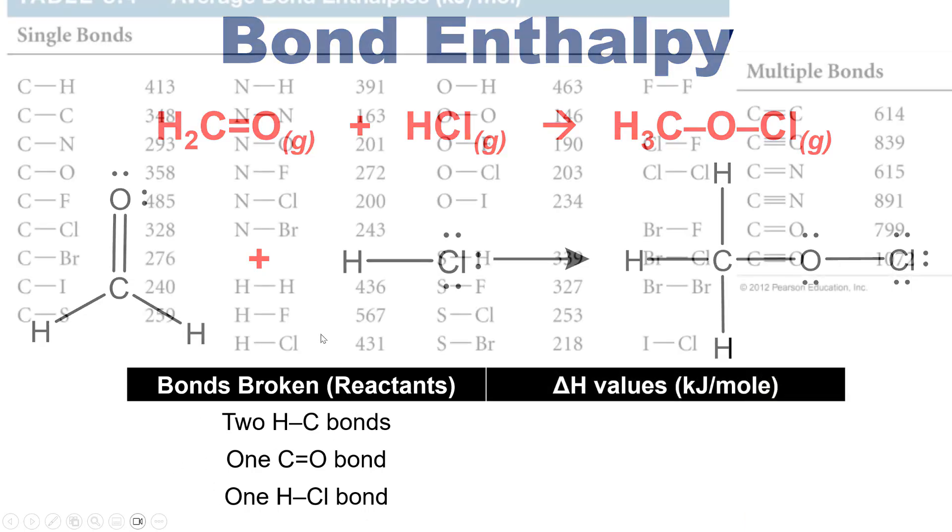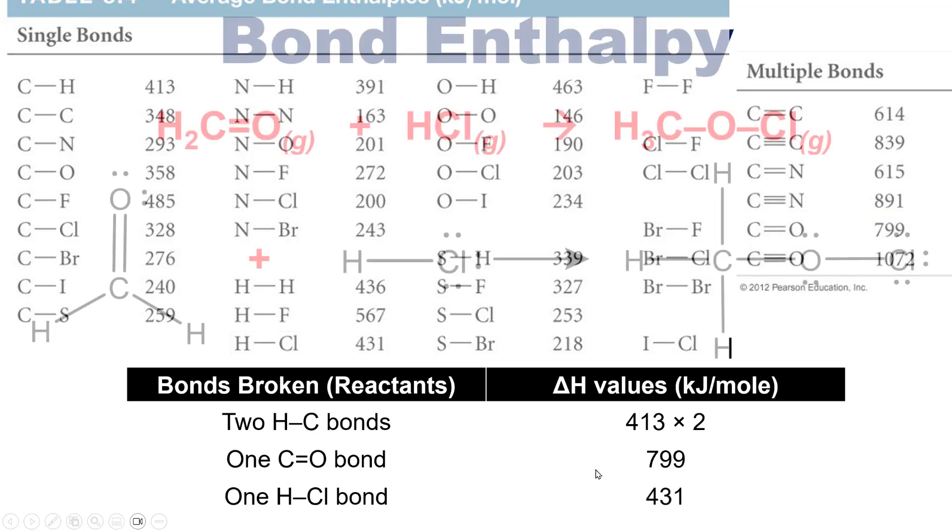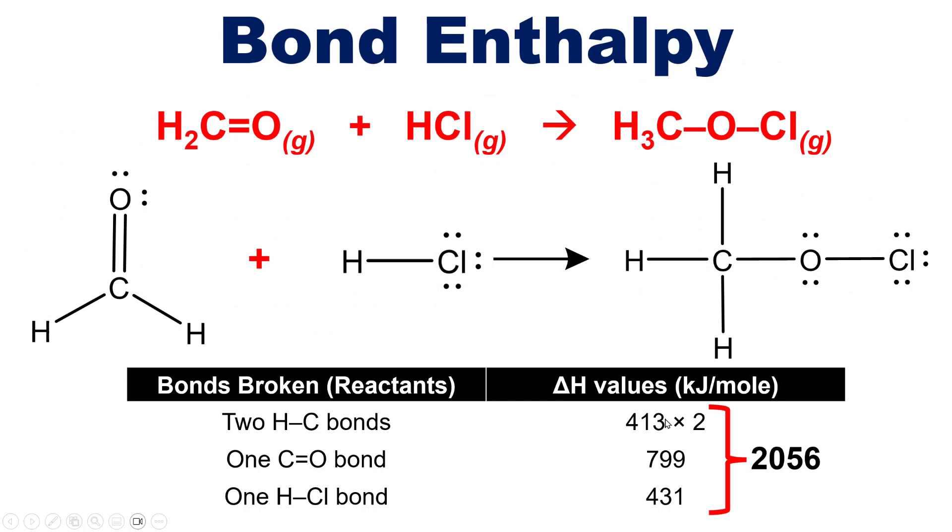Well yeah, you can see that a hydrogen carbon single bond is worth 413 kJ per mole. So as I do my addition here, I'm going to multiply that by two because I've got two carbon hydrogen single bonds. A carbon oxygen double bond is worth 799 kJ per mole and a hydrogen chlorine single bond is worth 431 kJ per mole. If I add all of this stuff together, I end up getting a total bond value of 2056 kJ for all the reactant bond enthalpies.